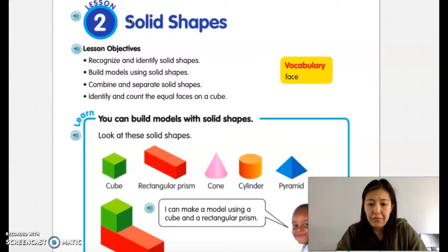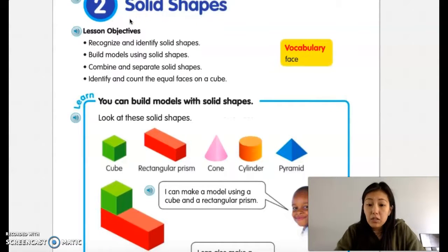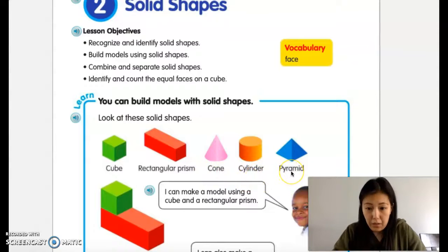So we have different solid shapes boys and girls, and again you can actually find a lot of these solid shapes in your home right now. We have cube, rectangular prism, cone, cylinder, and pyramid.